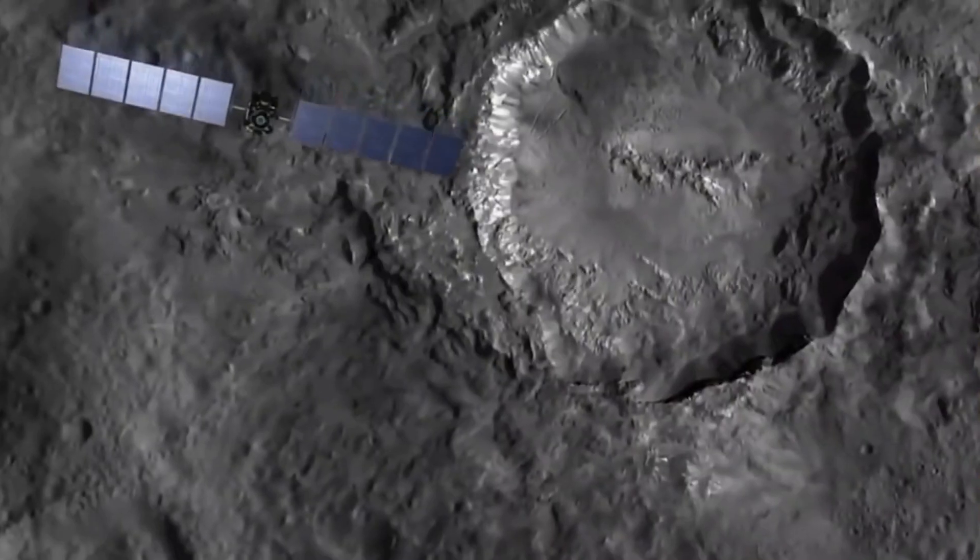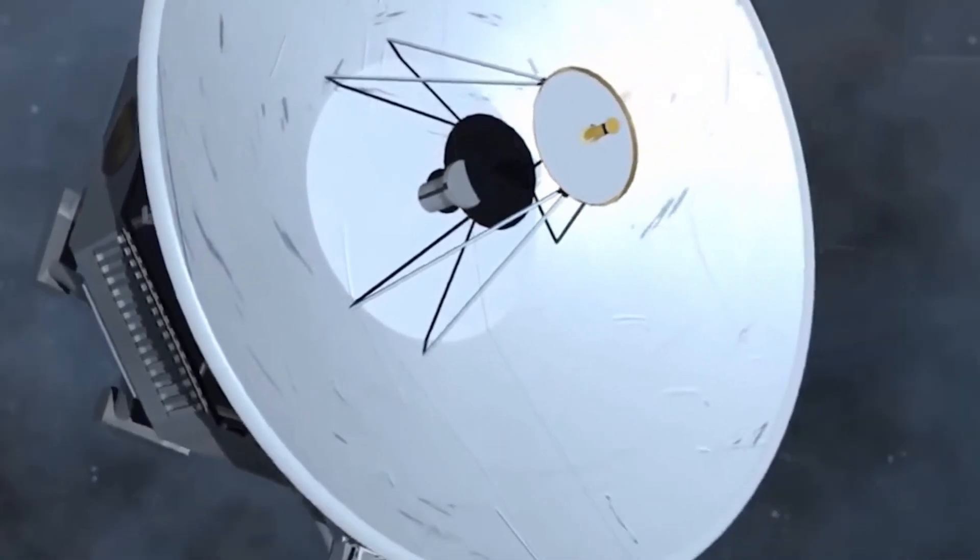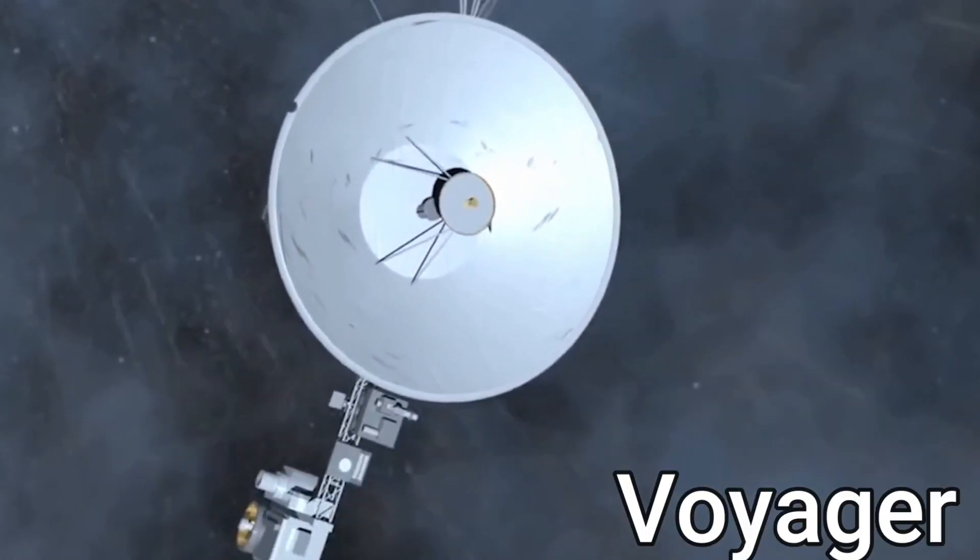At first, they kept their original name and were called the Mariner-Jupiter-Saturn space probes. However, due to their evolution from the Mariner space probes, their name was quickly changed to Voyager.